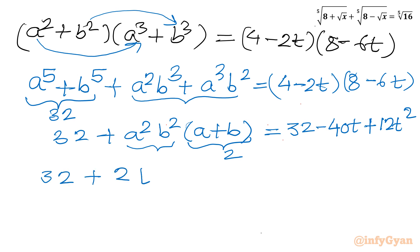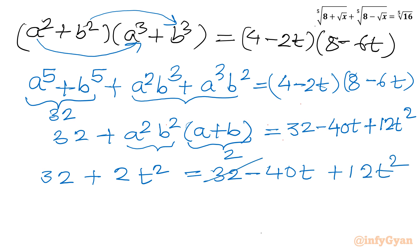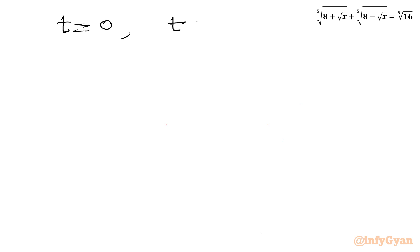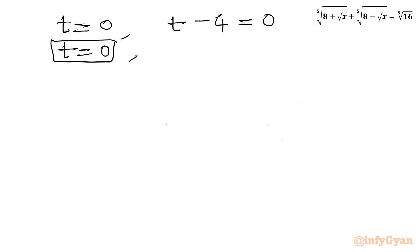So 32 + 2t² = 32 − 40t + 12t². Cancelling 32 from both sides and collecting terms: 10t² − 40t = 0. Taking 10t common: 10t(t − 4) = 0. So either t equals 0 or t equals 4.